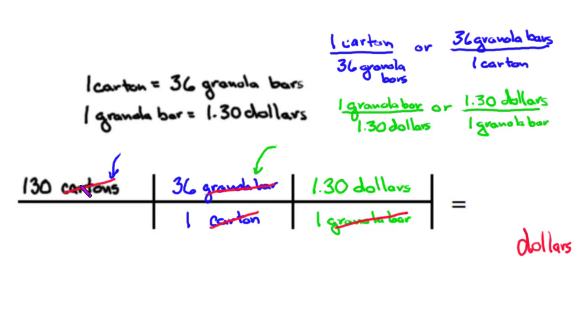So now it comes time to do the math. I'm going to take the very first number in my dimensional analysis grid, times the very next number, times my very next number. I'm going to divide that by this number that's in the denominator, times this number in the denominator. Now if I solve the top I get 6084, and if I solve the bottom I get one.